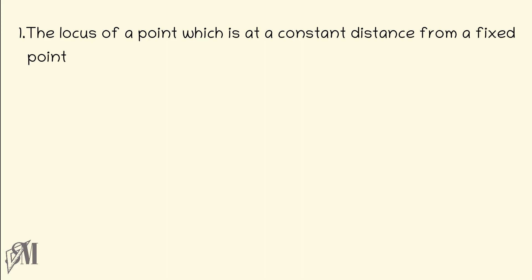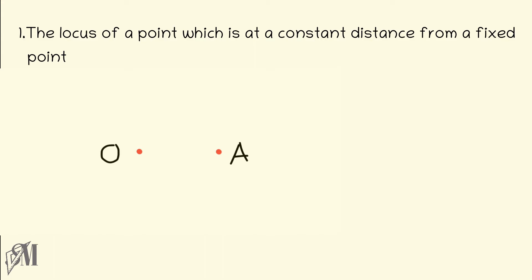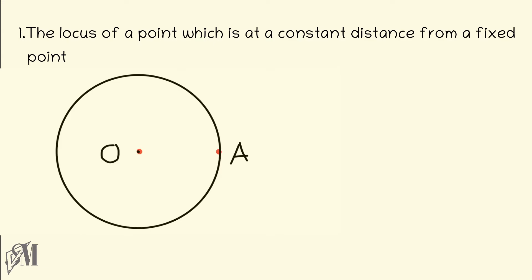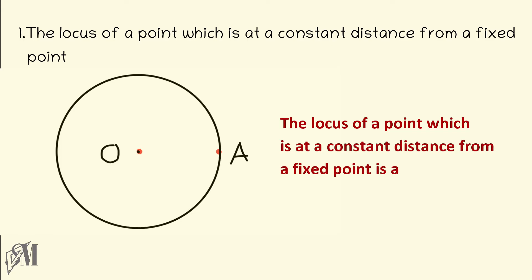First let us see the locus of a point which is at a constant distance from a fixed point. O is a fixed point and A is a point at a distance from O. We are going to find the path of A so that the distance from O to A is always the same. Definitely the path of A must be a circle, with center O. We can conclude the locus of a point at a constant distance from a fixed point is a circle.